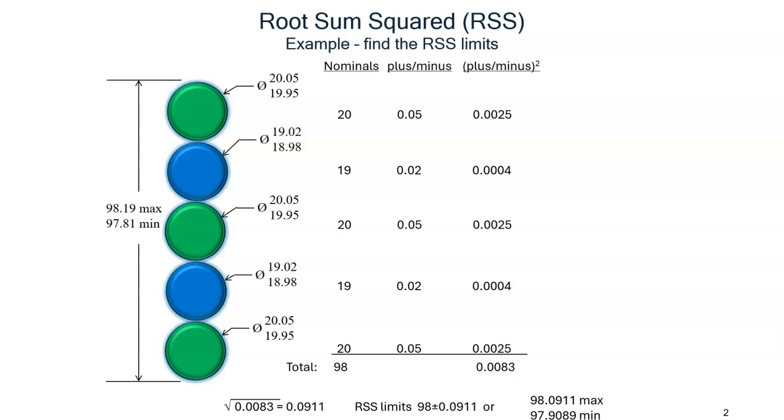Let's look at an example of applying RSS. Our example uses an assembly consisting of six rollers with the dimensions shown. The assembly is shown on the left with the max-min dimensions. Note that the arithmetic max and min for the assembly is also shown.